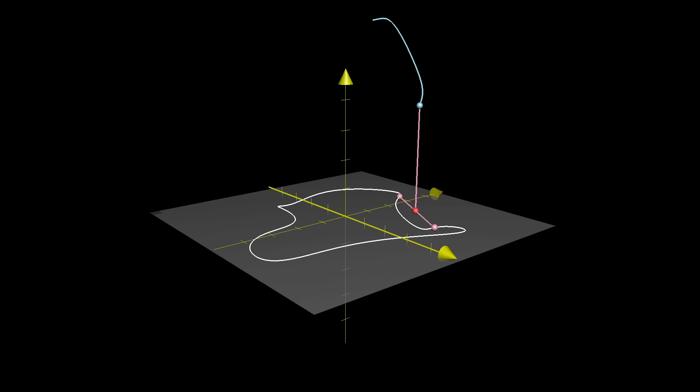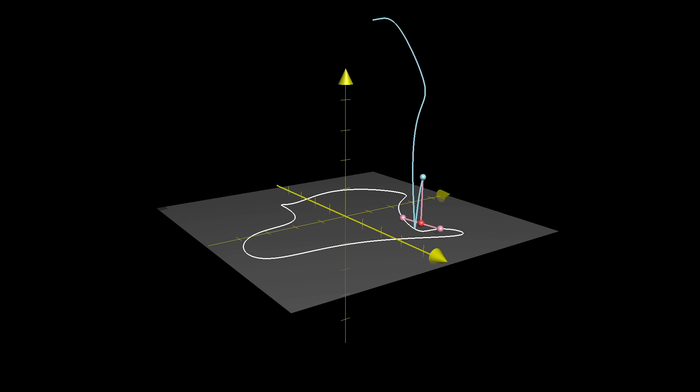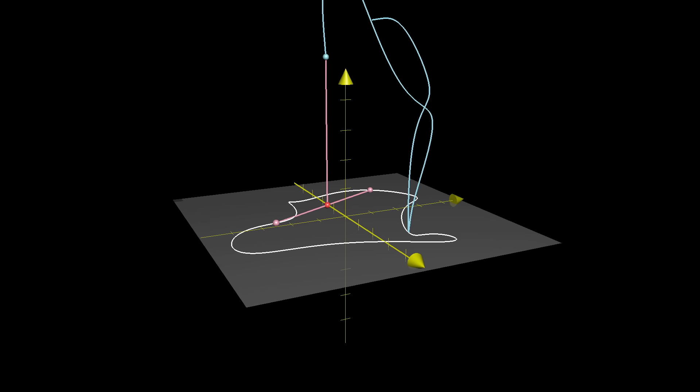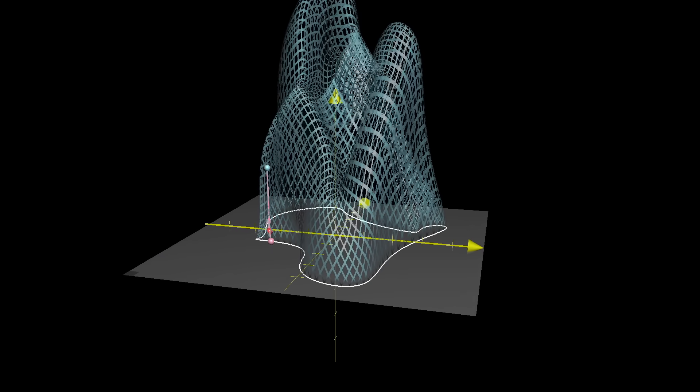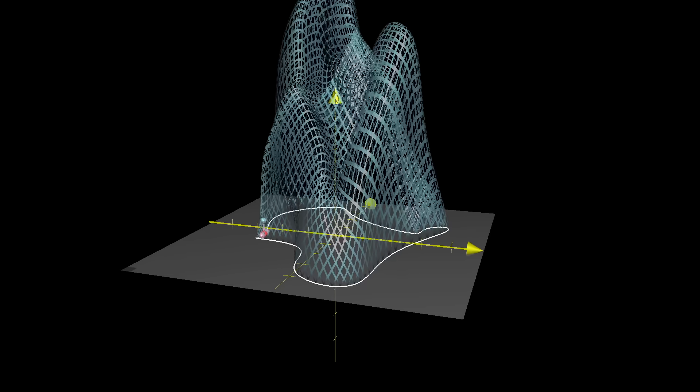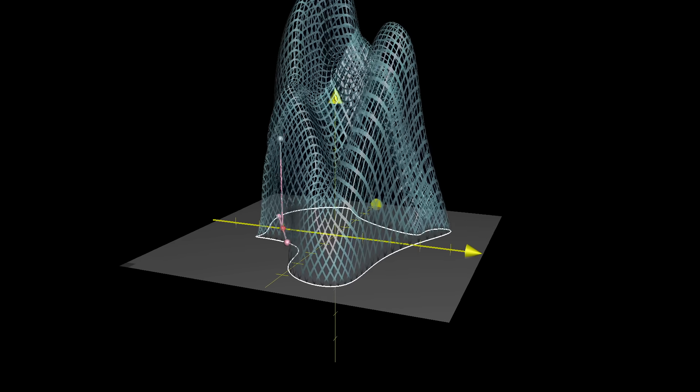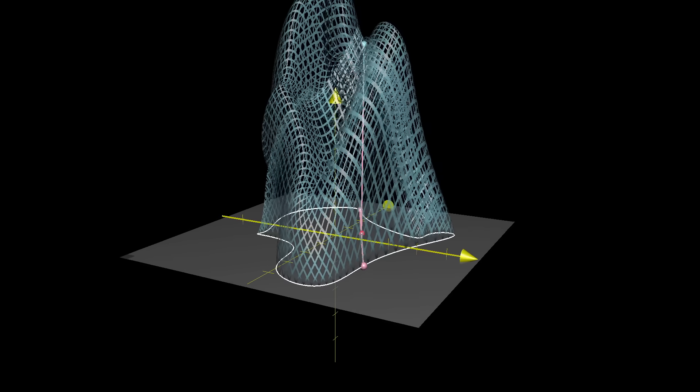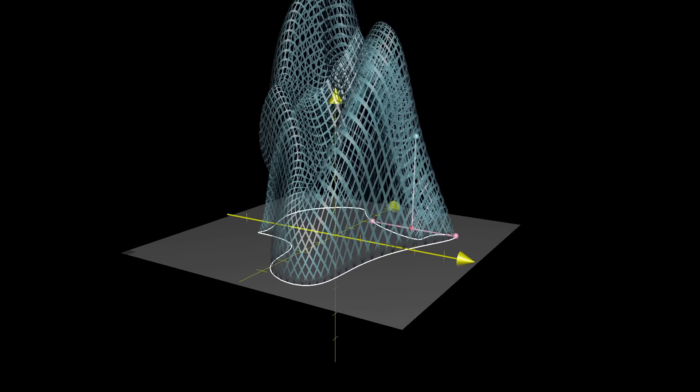As you do this for many possible pairs of points, you'll effectively be drawing through 3D space. And if you do it for all possible pairs of points on the loop, you'll draw out some kind of surface above the plane. Now look at the surface and notice how it seems to hug the loop itself. This is actually going to be important later, so let's think about why it happens.